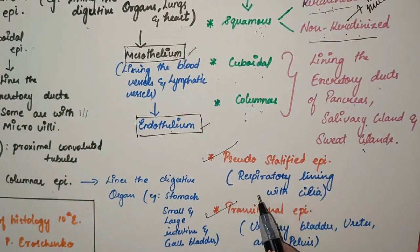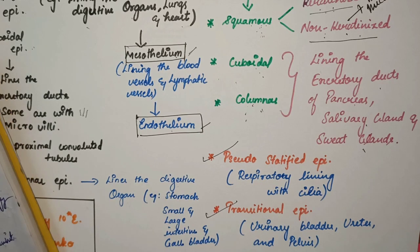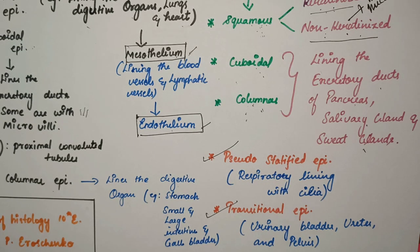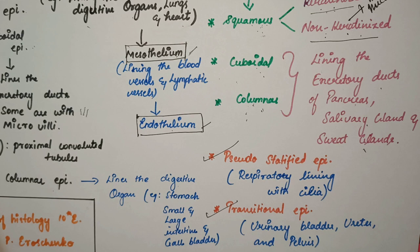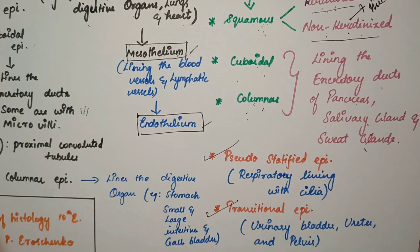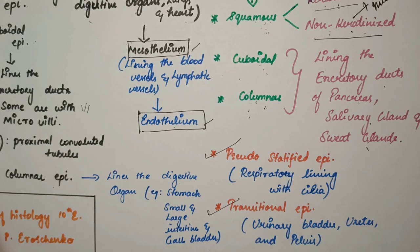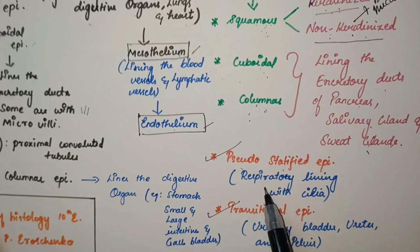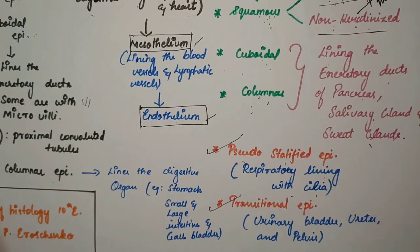Pseudostratified epithelium lines the respiratory tract and has cilia. It is called pseudostratified because it is actually a single cell layer — all cells attach to the basement membrane — however, not all cells reach the surface. This gives the false appearance of multiple layers, which is the exact meaning of pseudostratified epithelium.